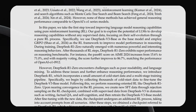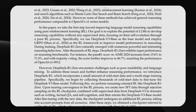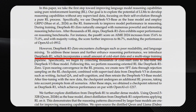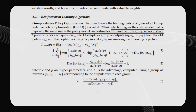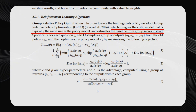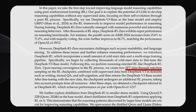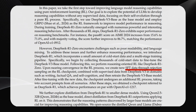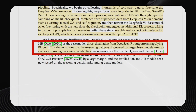DeepSeek R1 actually starts out with a very small amount of cold start data and has a multi-stage training pipeline. They start off just using that very small amount — in the thousands of examples — of cold start data to fine-tune the DeepSeek V3 base model. Then they go into reinforcement learning, just like DeepSeek R1 Zero. Then they go back to doing supervised fine-tuning (SFT) with data they created through rejection sampling on the RL checkpoint they had made at that point. And then after that, they finally go into another RL process, more akin to the traditional approach where people would do RL after SFT.